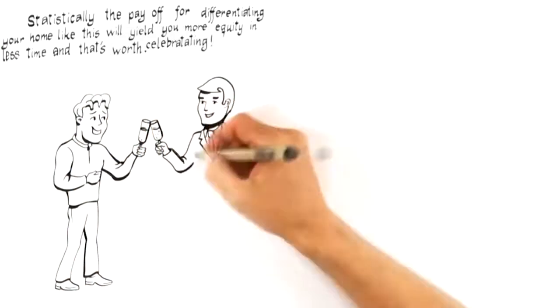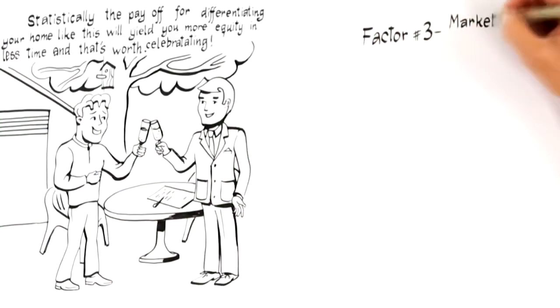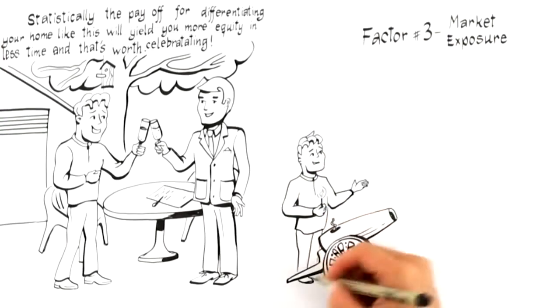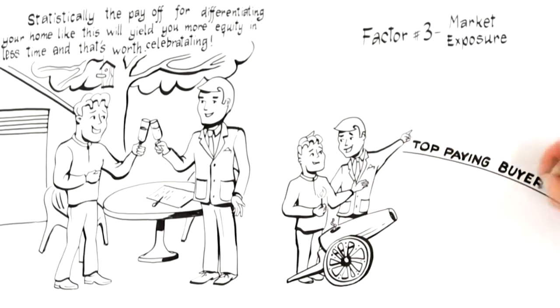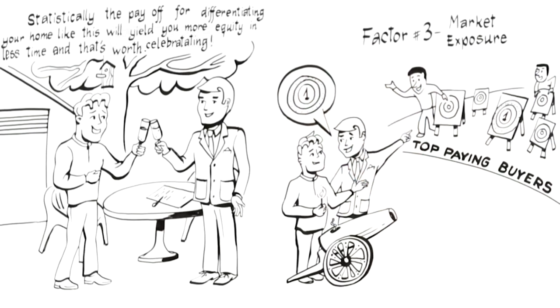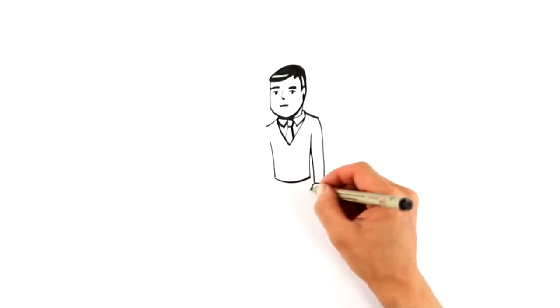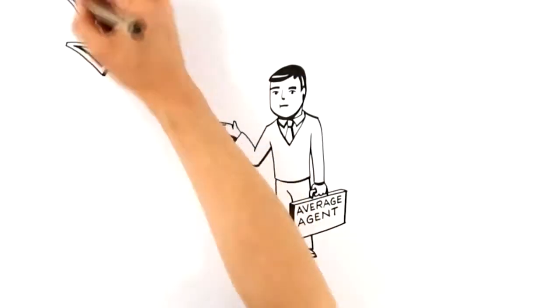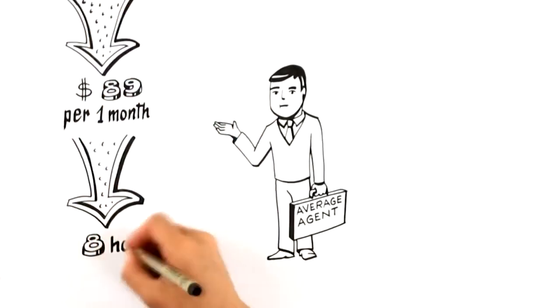Moving on to factor number three, market exposure. Once your home has been differentiated to target top-paying buyers like a loaded cannonball, it's ready to fire. But this next factor ensures when you launch your home onto the market, it's aimed at the right target. This requires you to be especially careful when selecting a professional. Here's why. Exposing your home to the market requires marketing. Research shows that the average agent only spends $89 a month on marketing and only sells an average of 8 homes per year.